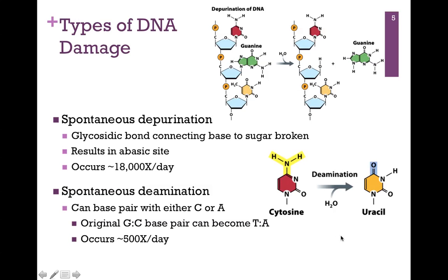Remember, uracil is a base we find in RNA, not DNA, and the base pairing interactions are different. It can base pair with either C or A, so instead of incorporating a G, we might incorporate a C or an A. Over time, we might replace that GC base pair with a TA base pair. This spontaneous deamination occurs about 500 times in a day. So today, your DNA will be spontaneously depurinated 18,000 times and deaminated 500 times. That might seem discouraging, but as we'll learn in the next lesson, we have some pretty sophisticated repair mechanisms to repair this kind of damage.